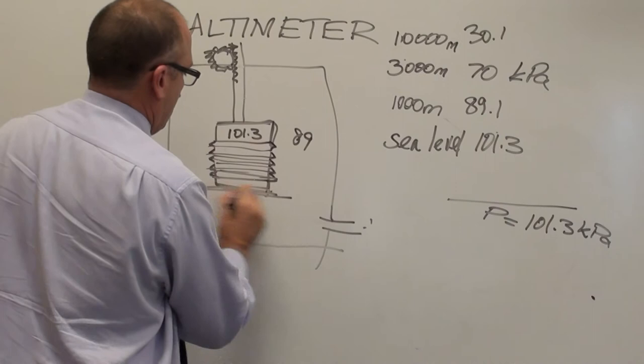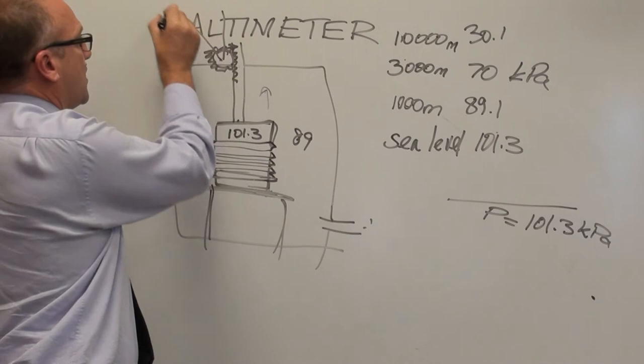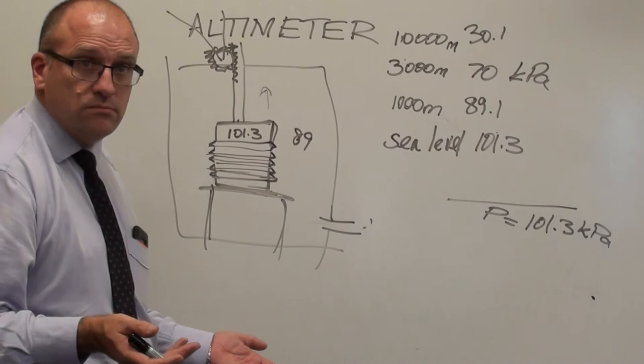That when I go up 1,000 meters, the pressure outside is 89. That's bolted to the bottom. That rises a bit because the pressure inside is less. When it rises a bit, that gets the gear and it drives the gear out to here and it says, oh, you are now 1,000 meters up in the air. Too simple?